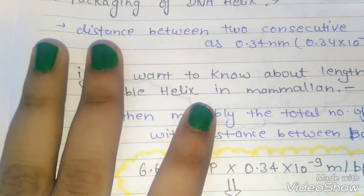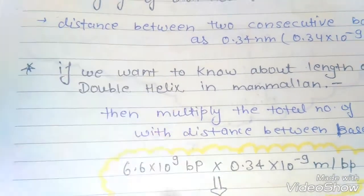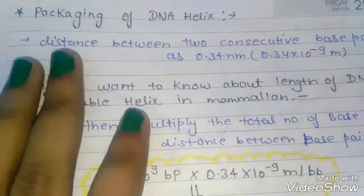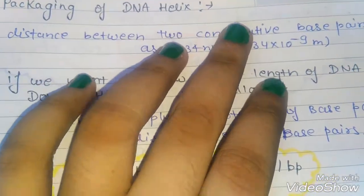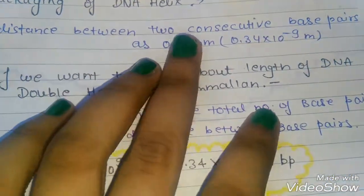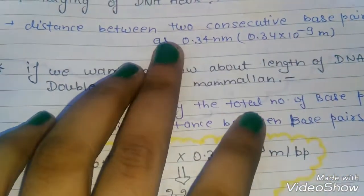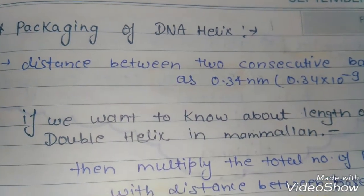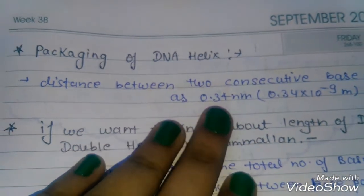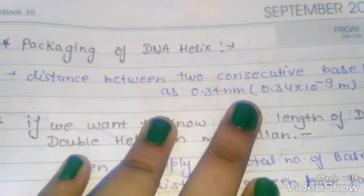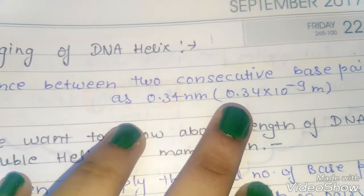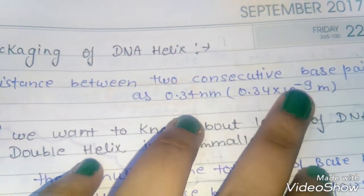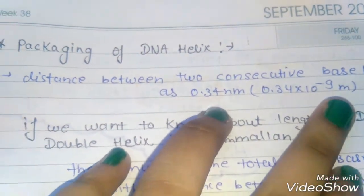First, the distance between two consecutive base pairs: the distance between two consecutive base pairs is 0.34 nanometer, which we can write as 0.34 × 10⁻⁹ meter.